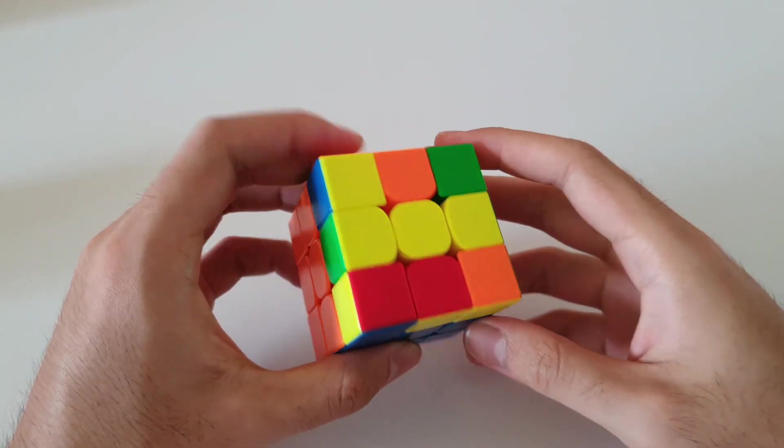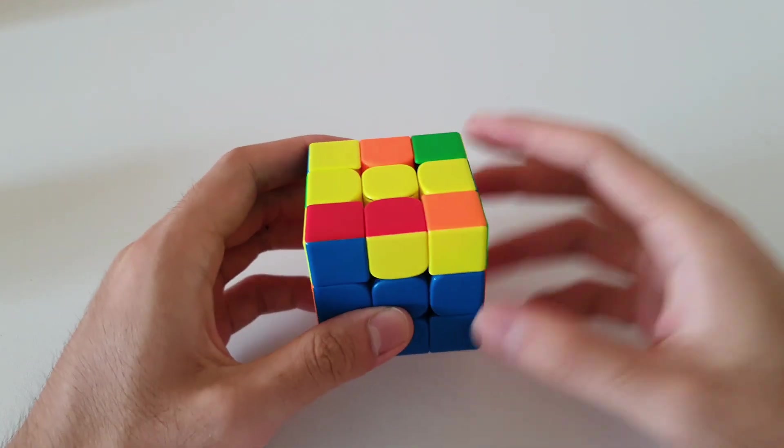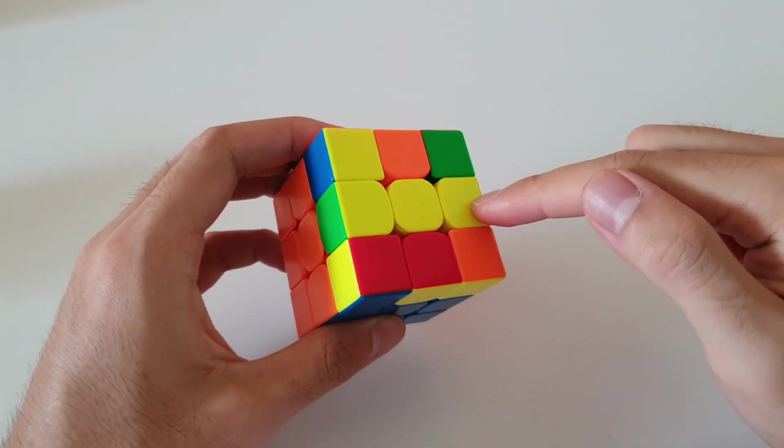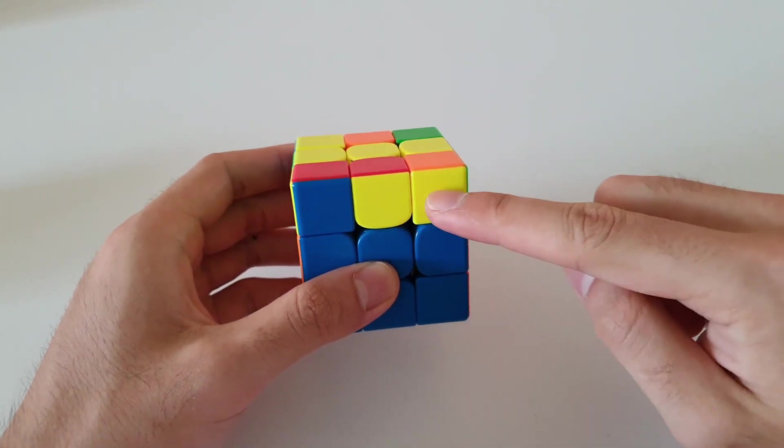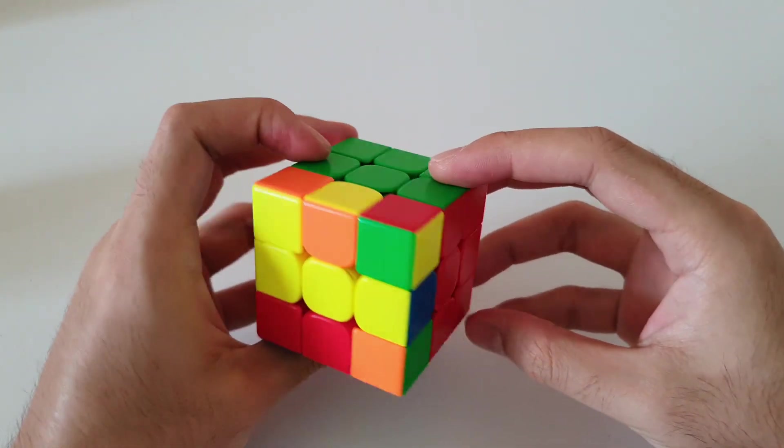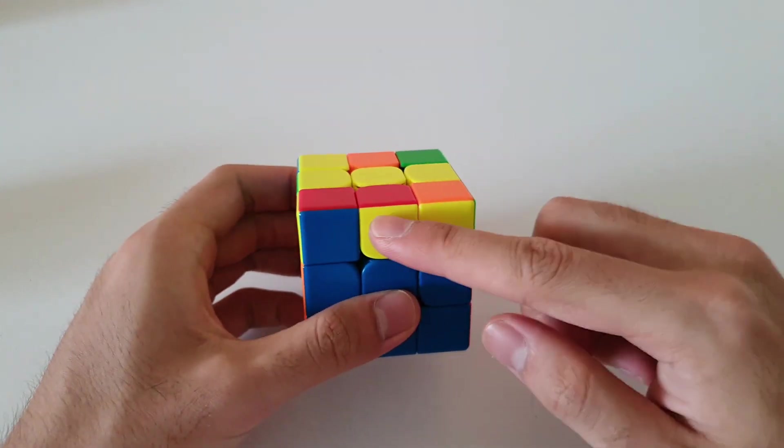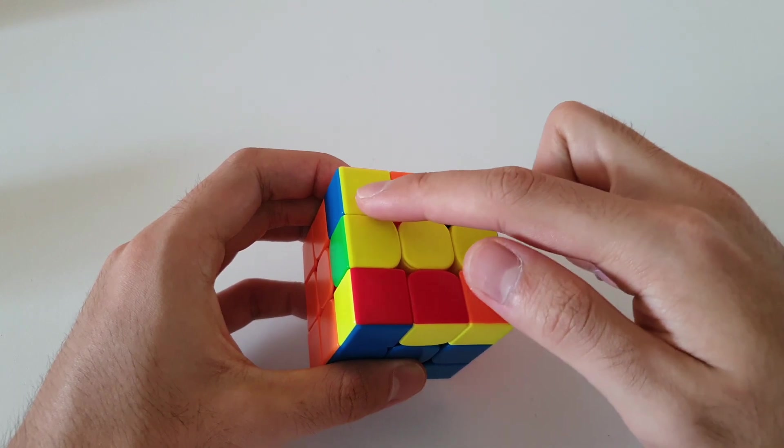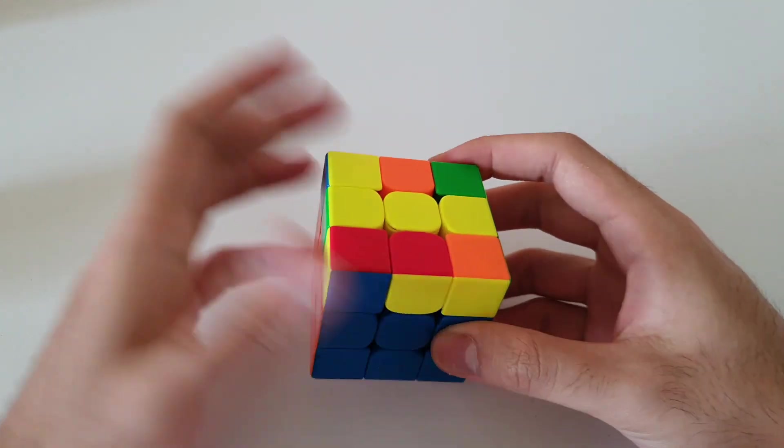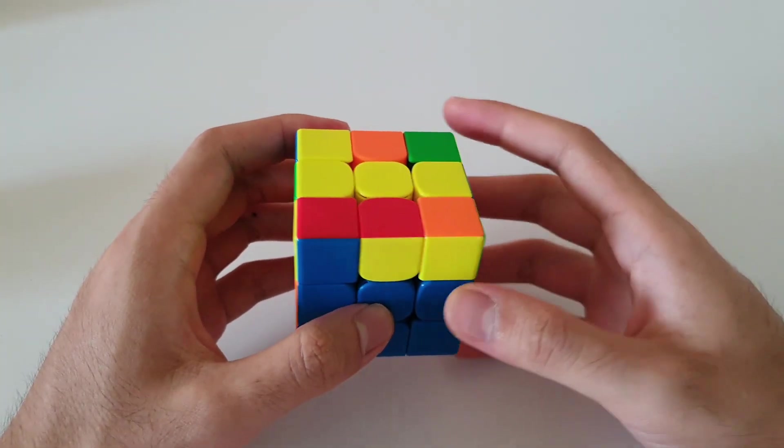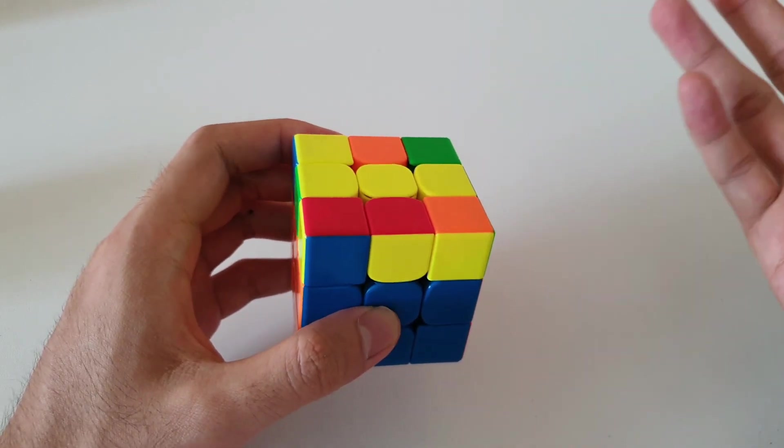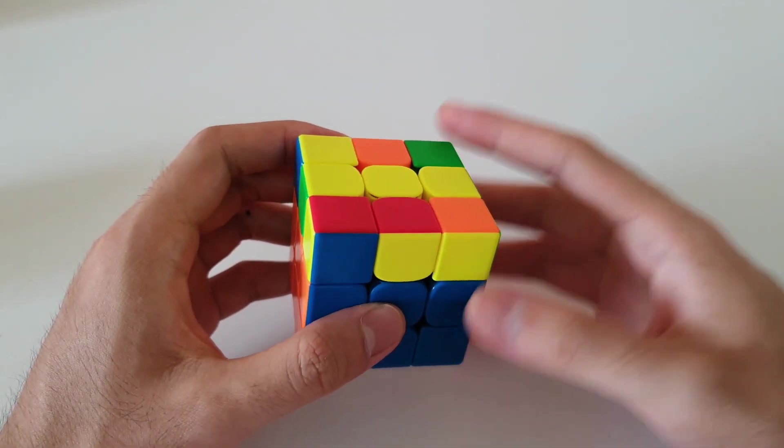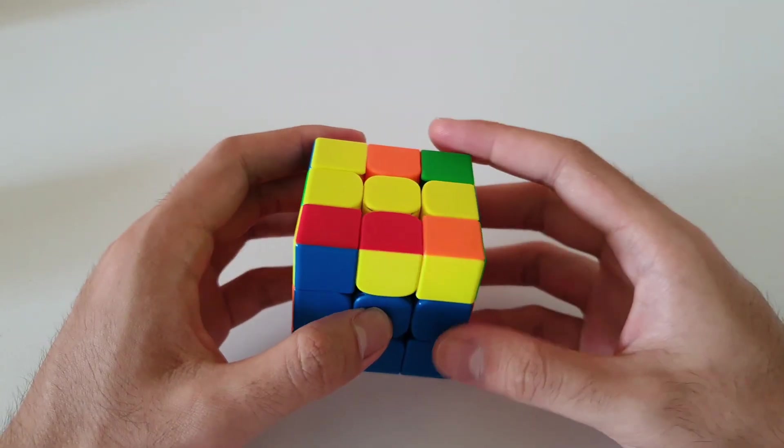Final knight move shape case is this one here. Once again knight move shape on the top layer, one 2x1 bar on the side. You always want to hold this one at the front. Notice how the corner, the oriented corner is now on the left side, which reminds us that this is the left-handed algorithm, and so we can use the exact same algorithm as the previous case but just mirrored for our left hand.